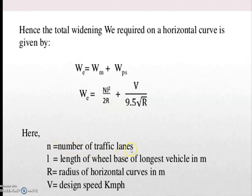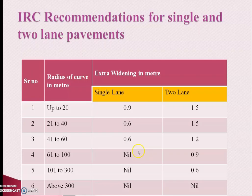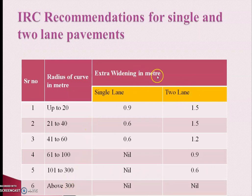In the total widening formula WE = WM + WPS: N is the number of traffic lanes, L is the length of the wheelbase, R is the radius of the horizontal curve, and V is the design speed in km/h. This is the IRC recommendation for single and two-lane roads. The radius of the curve varies accordingly, and for single or two lanes, the extra widening in meters at the turning point is measured from the center line of the roadway.